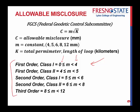Regardless, this is what the FGCS has come up with to establish what our loop closure is and how to fix it. If you don't meet the required misclosure, then you run the loop again. If you still don't meet it, you run it again — you keep running it until you get it right.